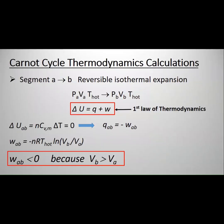Segment A to B is a reversible isothermal expansion. The initial condition B_A, V_A, T_hot is converted to the final condition B_B, V_B, T_hot.